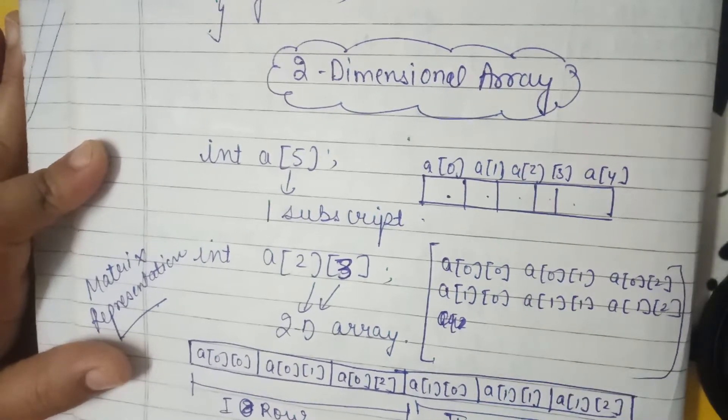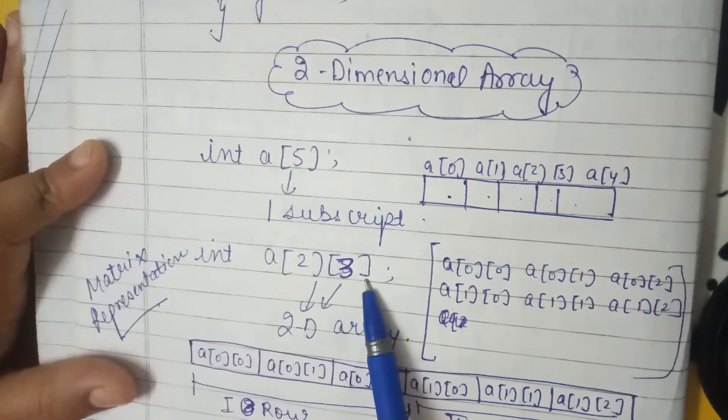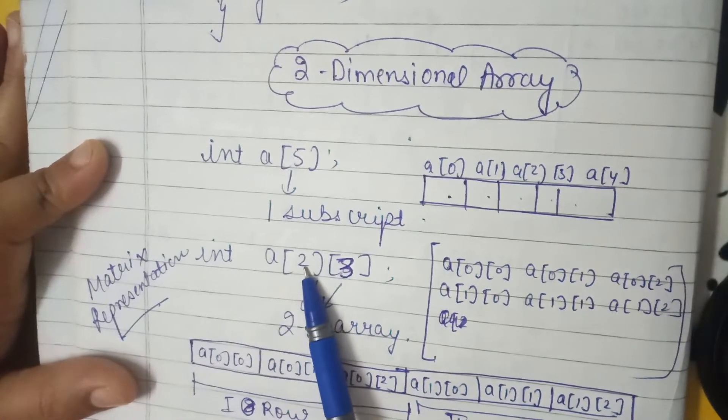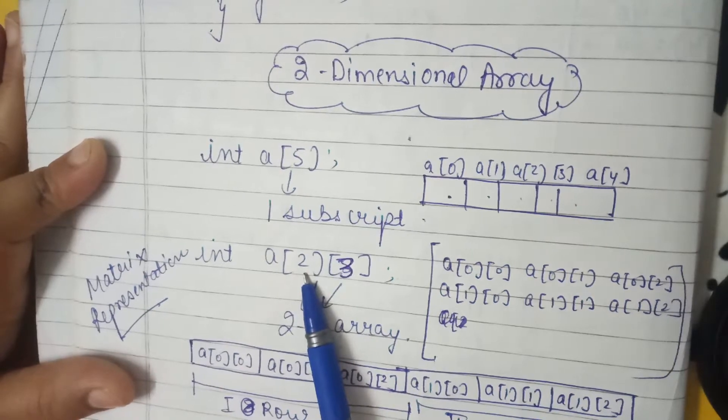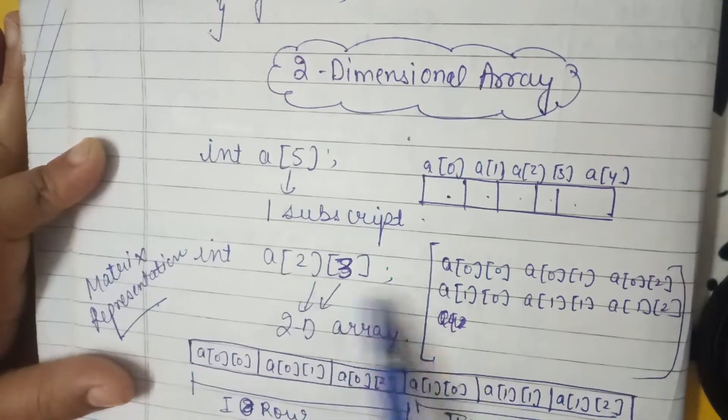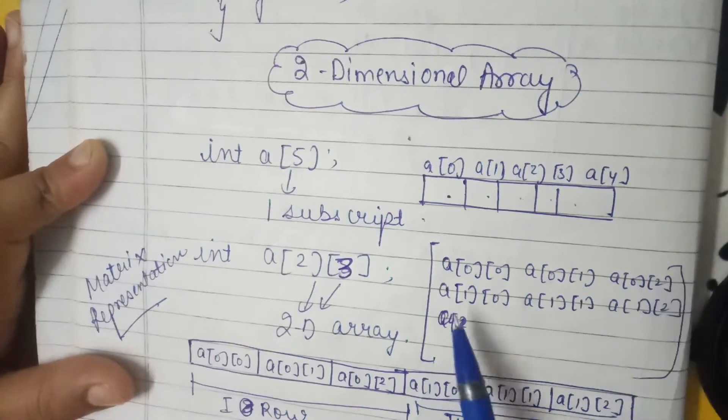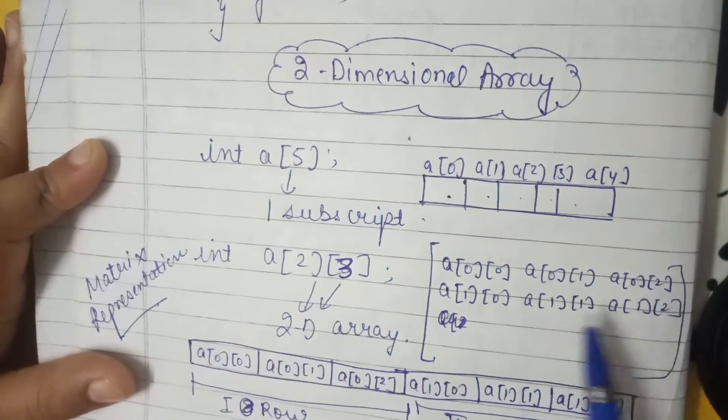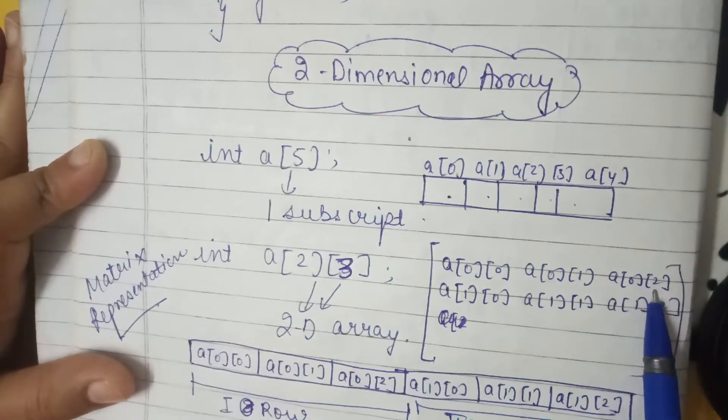But when we have representation like int a[2][3], it means number of rows will be two and number of columns will be three. Data is stored like a[0][0], a[0][1], a[0][2] and second row a[1][0], a[1][1], a[1][2]. So a[0][0] will store data elements, a[0][1] will store data elements, a[0][2] will store data elements, then a[1][0] for second row and so on.